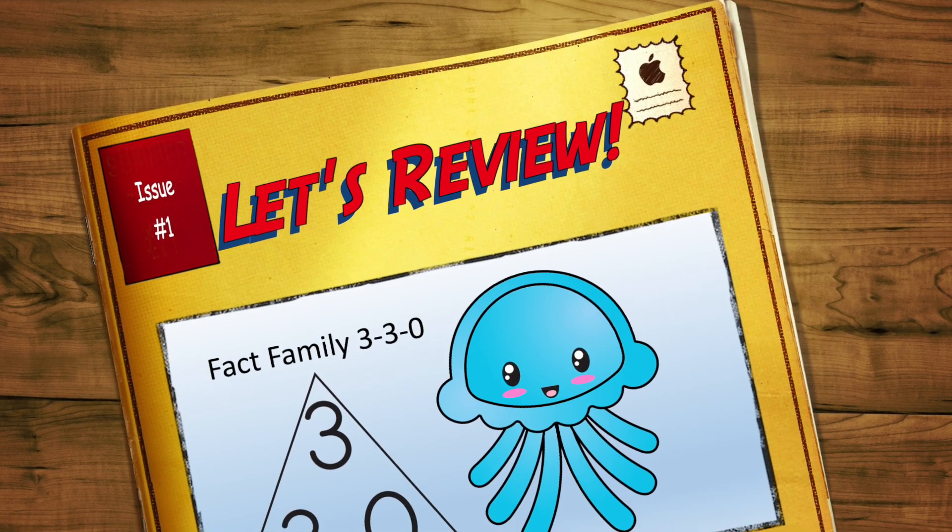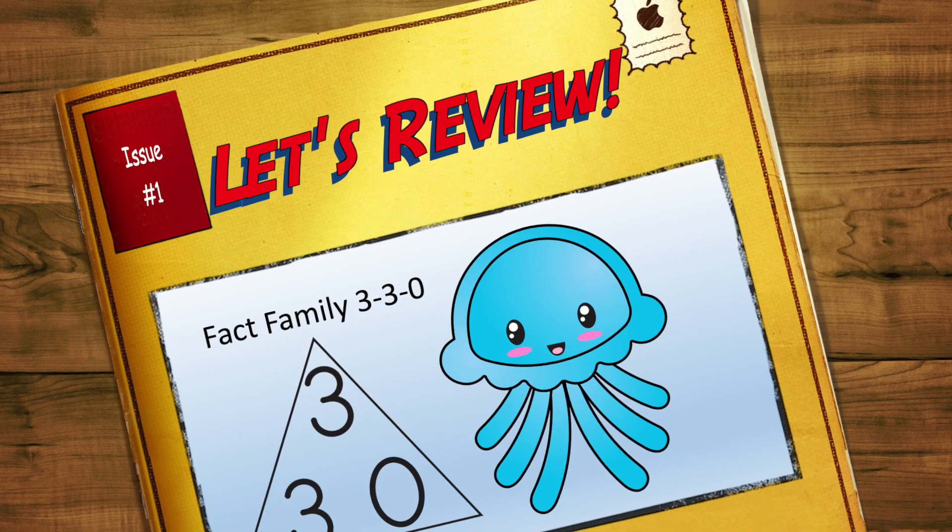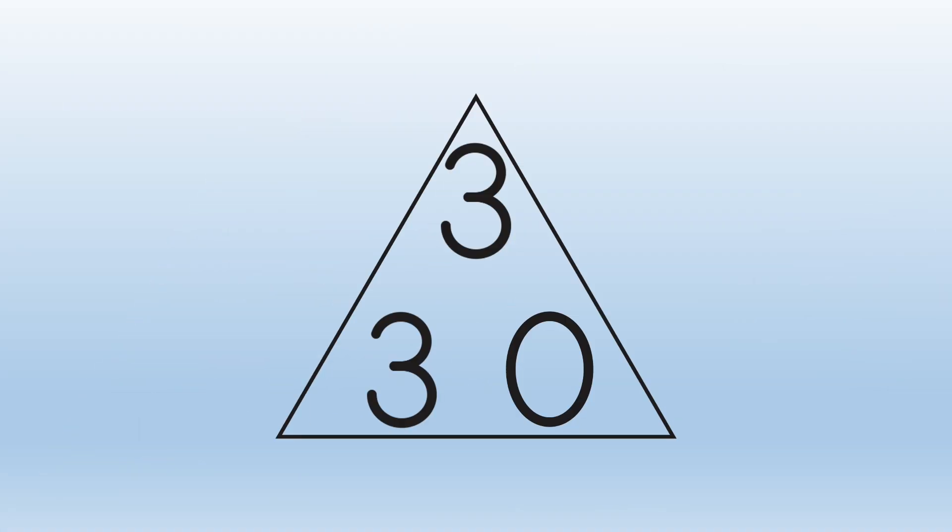Let's review what Joey discovered. A fact family is a group of numbers that go together to make addition and subtraction number sentences. A fact family triangle helps us define these.